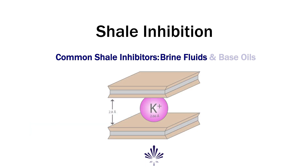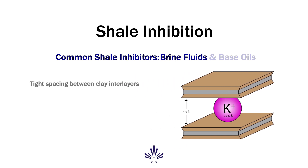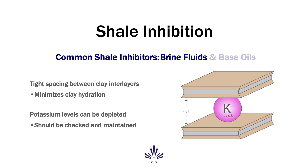Potassium chloride should be noted, as the similarity in diameter between a potassium ion and the clay lattice space results in tight spacing between clay interlayers, minimizing clay hydration. When treating with potassium chloride for inhibition, levels can be depleted and should be checked to ensure sufficient concentrations are maintained.